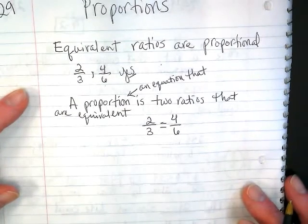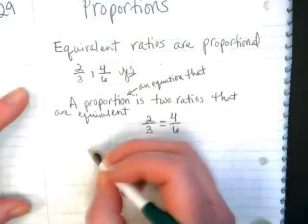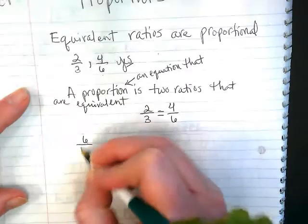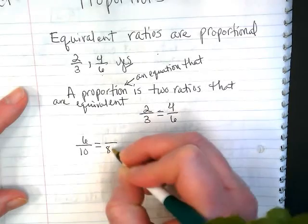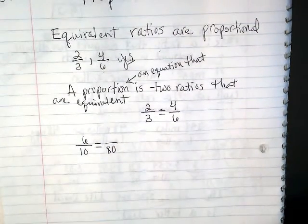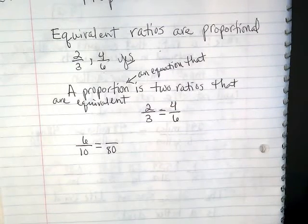So what's kind of cool about that is if I have a proportion with part of it missing, like what if I had six-tenths is equal to something over 80. We can use what we know to find the missing part.